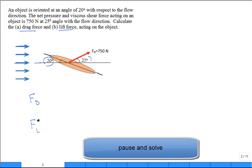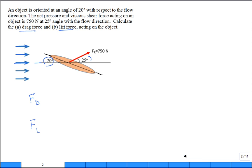The net pressure and viscous shear force is 750 Newtons acting at 25 degrees with the flow direction. Calculate the drag force F_D and the lift force F_L acting on the object. I will pause and walk around and see how you do on this problem. So I checked a few students and a few of you had it right. The drag force is always parallel with the direction of the flow and the lift is always perpendicular to the direction of the flow. It's a distractor, the 20 degrees. Don't use it.